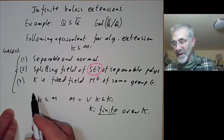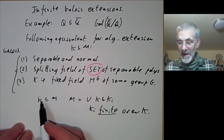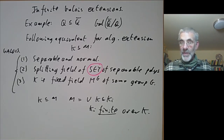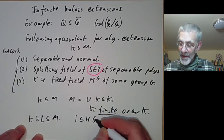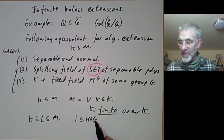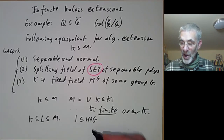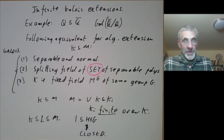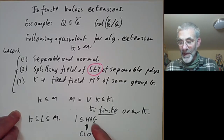One thing we haven't talked about is the correspondence between subgroups of the Galois group and intermediate extensions L between K and M. In fact, it's not true that all extensions L between K and M correspond to subgroups of the Galois group G — there's one extra condition we need. It turns out the group G has a topology and subfields of M containing K only correspond to closed subgroups of G.